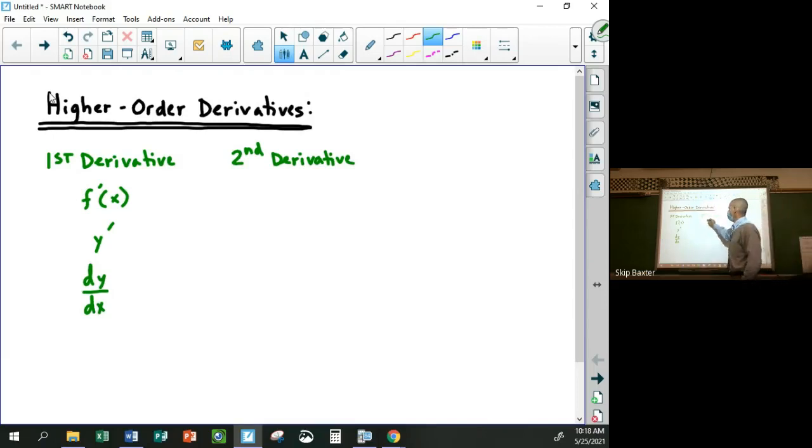the notation is just that double prime of x or y double prime. Now the notation for this is a little bit weird. Remember the symbol d/dx is the derivative and the y is kind of like separate, right?